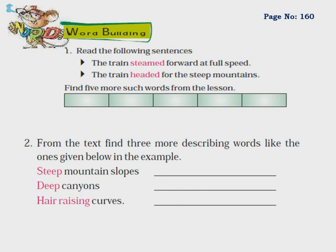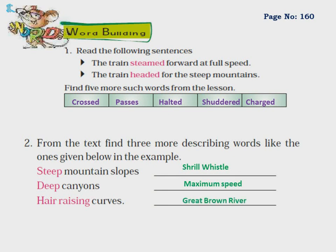Word building: Read the following sentences — the train steamed forward at full speed; the train headed for the steep mountains. The highlighted words are steamed and headed. Find five similar action words from the lesson, such as crossed, passed, halted, shuddered, charged. From the text, also find three more describing words like steep mountain slopes, deep canyons, hair-raising curves, shrill whistle, maximum speed, great brown river.